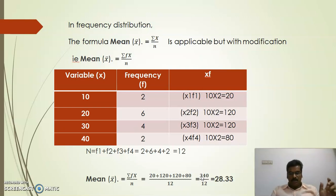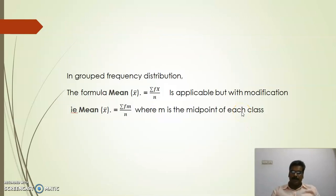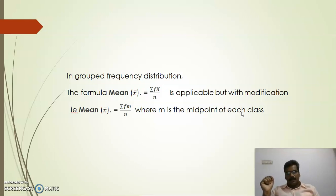So first we discussed simple data distribution, where we used sigma x by n. Second is frequency distribution, where we used sigma fx by n. There is also another kind of distribution called grouped frequency distribution. In the case of grouped frequency distribution, the sigma fx by n formula is modified to sigma fm by n.